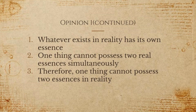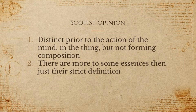Then we have the Scotist opinion. This is that there is a distinction prior to the action of the mind in the thing that does not form any kind of composition. The argument for this is that we have distinct pieces of knowledge about single essences which we know exist as simple and unified, and as a result we have knowledge that there is some kind of distinction here. Our distinction has to map onto something real in the world because it's knowledge of the essence, not simply knowledge of ideas.